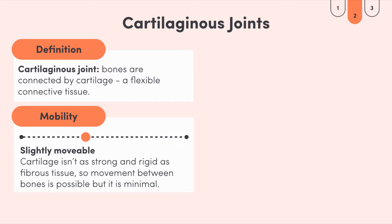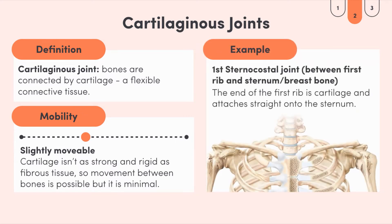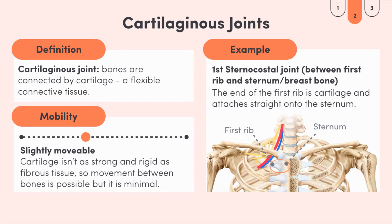However, there is still only minimal movement in a cartilaginous joint. An example is the first sternocostal joint — the joint between the rib and the sternum. It's important that this joint has some flexibility because the ribs need to move with every breath so that our lungs can expand and deflate. But that's about all that can happen, because right next to your first rib lies some pretty important real estate including major arteries, veins and nerves — so we don't want to move them at all.